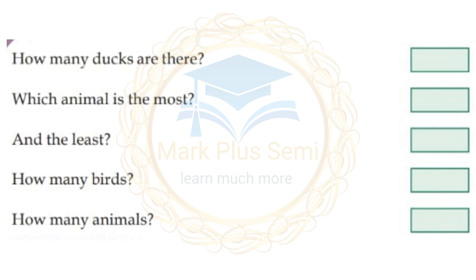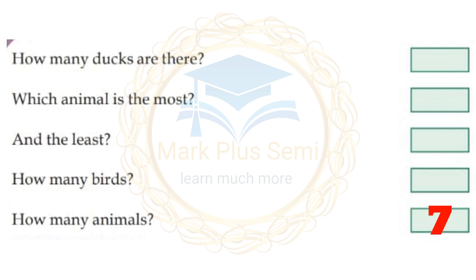How many animals are there? There are 3 cows and 4 goats. Total: 7 animals.